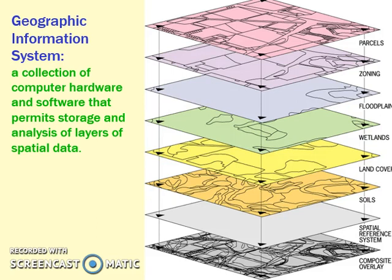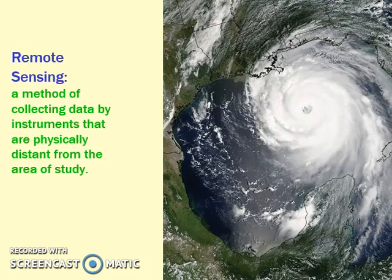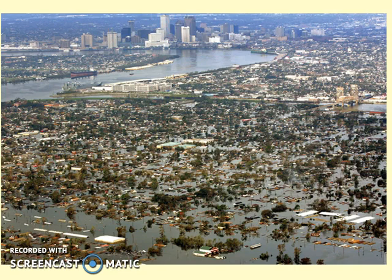GIS — Geographic Information Systems — is a software system that layers maps. You download the system and layer maps on top of each other. Urban planners use this for location theory, deciding the best place to put something based on the layered information. This is different from GPS — Global Positioning System — which uses satellites to tell you where you are and where you need to go. Remote sensing is similar in that you look at satellite images or pictures taken from an airplane to see the aftermath of something, like before and after a situation, without needing to be in the area. This is a great picture of New Orleans after Hurricane Katrina — you can see the devastation without having to be there.